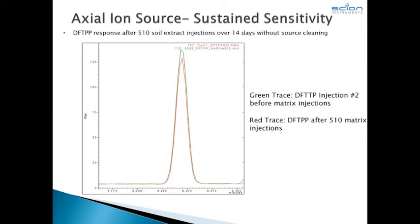Of course, tune stability is only one criterion. Passing your CCC and SPCC checks are just as important. While passing the tune indicates spectral control, a system can pass tune without maintaining sensitivity. If your CCCs or SPCCs are out, no more customer samples — shut down for maintenance. The axial flow source was designed to provide more than excellent sensitivity, but to also provide sustaining sensitivity. The extracted ion profiles for DFTPP show virtually no loss in sensitivity after 14 days and 510 matrix injections — no cleaning and no lost time for maintenance. Axial flow delivers increased productivity.